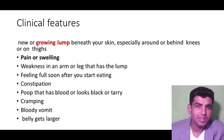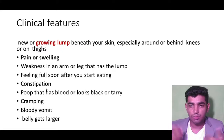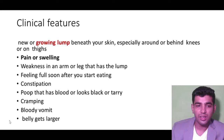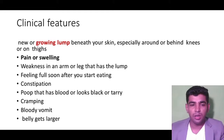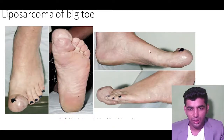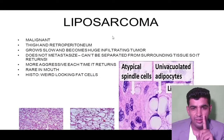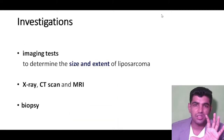Clinical features of liposarcoma include painful swelling — unlike the painless lipoma — weakness in the arm, and constipation. If it invades the gastrointestinal system, it can decrease GIT motility causing constipation, and may cause bloody vomiting. This image shows liposarcoma of the big toe with a lobulated cut surface and atypical spindle cell formation, indicating malignancy.